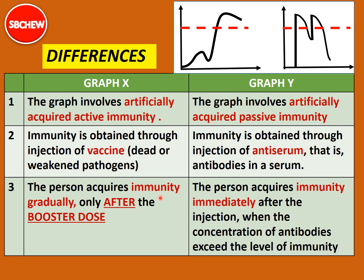Third difference: for Graph X, the person acquires immunity gradually — only after the booster dose. The level of antibody rises slowly over weeks or months, and finally exceeds the level of immunity. For Graph Y, the person acquires immunity immediately after injection — the level of antibodies shoots up beyond the level of immunity right away. So: immediate immunity for Y and gradual immunity for X.